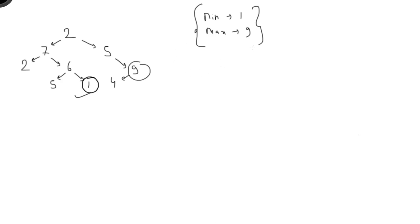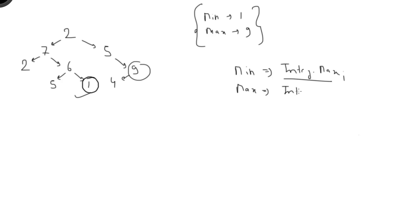For the logic, at the start we take temp variables: initialize minimum with Integer.MAX_VALUE and maximum with Integer.MIN_VALUE. In Java we have these constants available. You can also initialize maximum as zero and minimum as any sufficiently high value. Then we start from the root node and solve the question in pre-order manner recursively.